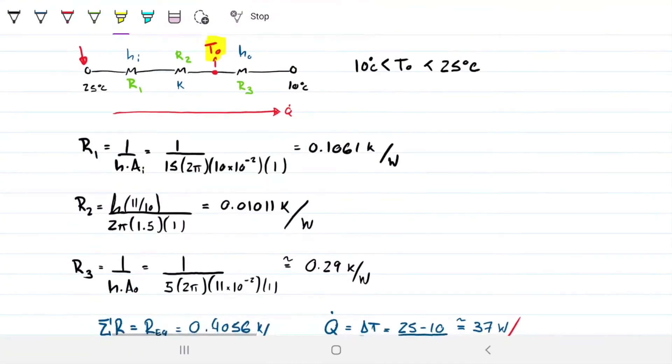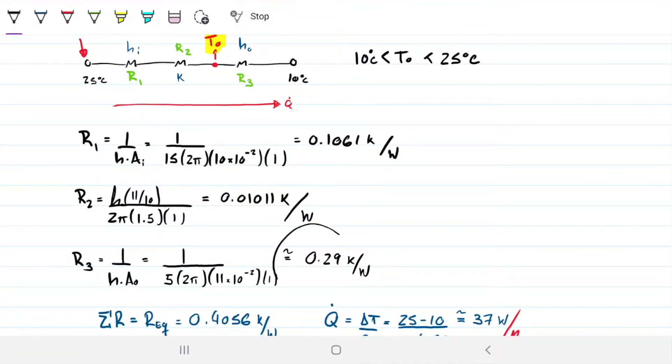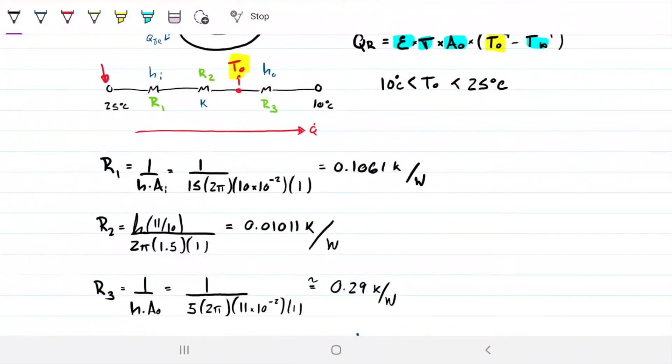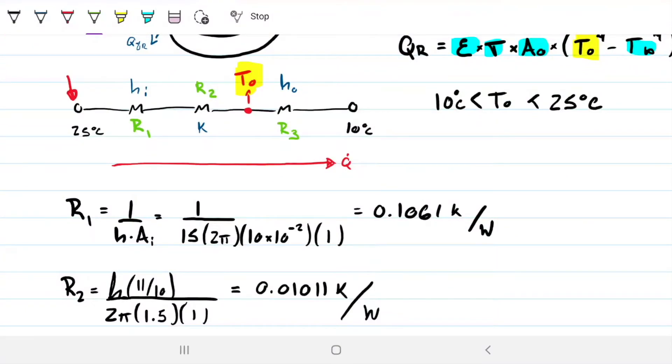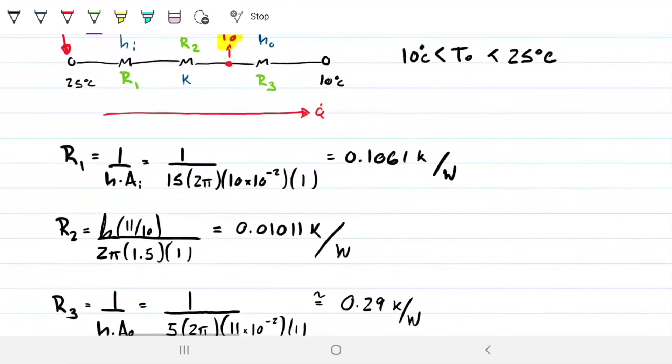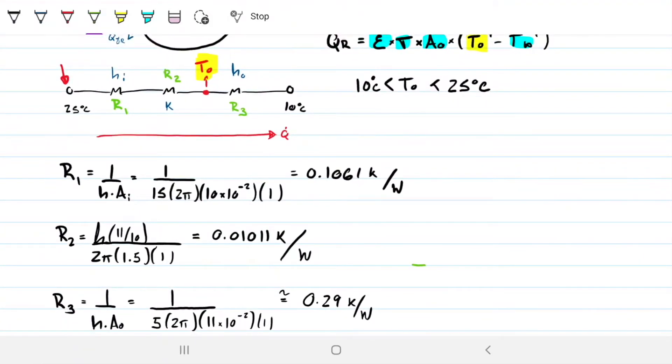To do that, there's a couple ways I can do it. I can consider this single resistance here, or I can consider these two guys here. It's up to me because whatever I do is going to be the same. One way I'm going to go between 25 and T naught. The other way I'm going to go between the 10 and T naught, and then I'll only have one resistance there. You can choose whichever rocks your boat. I'm going to go ahead and choose these two.